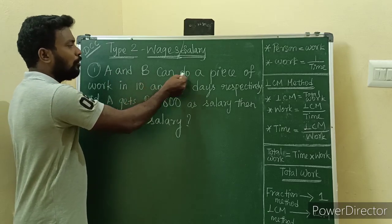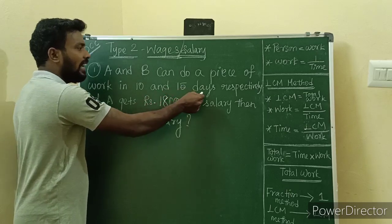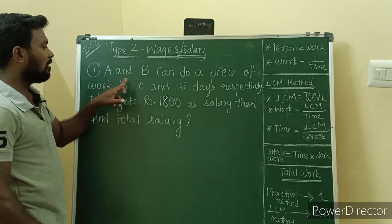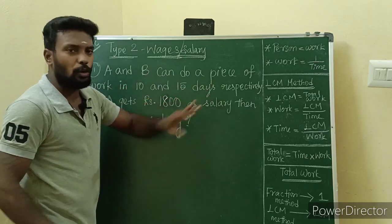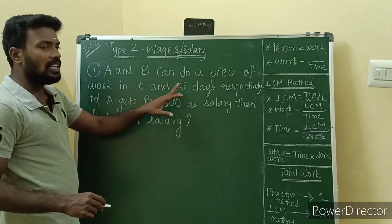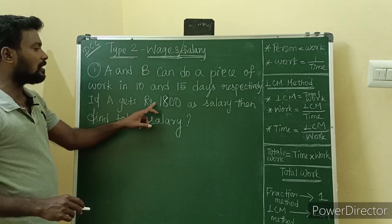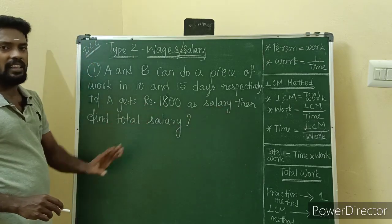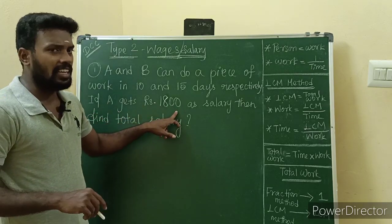A and B can do a piece of work in 10 and 15 days respectively. So A is doing work in 10 days and B is doing work in 15 days. If A gets Rs.1800 as salary, then find the total salary.